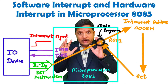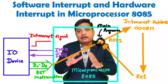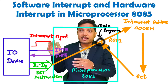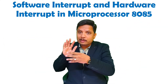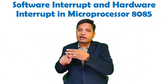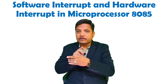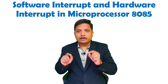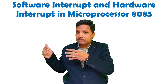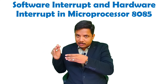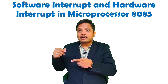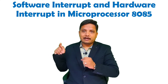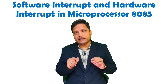Interrupts are given by external devices only. But in hardware interrupt, all pins have a well-defined memory location for interrupt service. In software interrupt, the interrupt comes from hardware, but the instruction for transfer of control is also given by that hardware — that is how it is different.